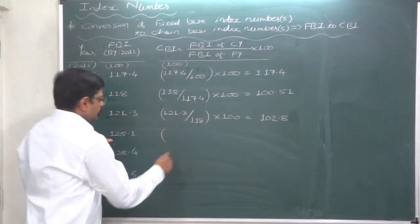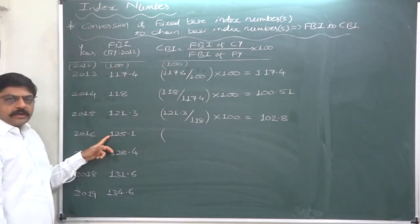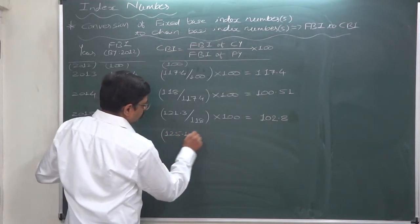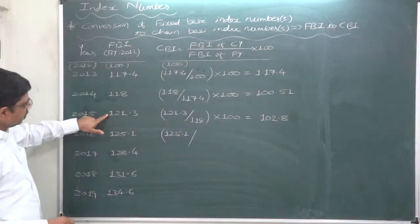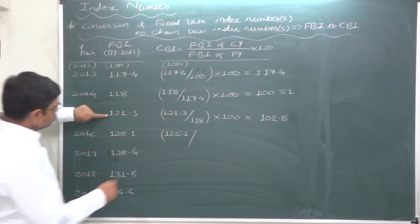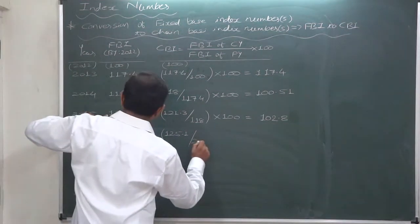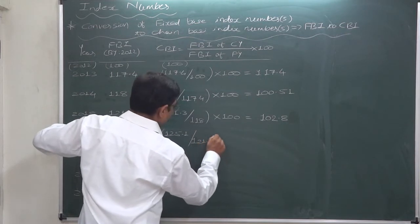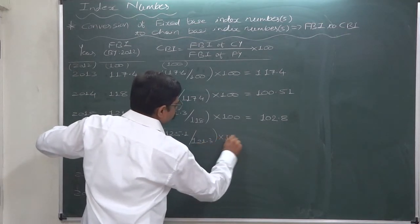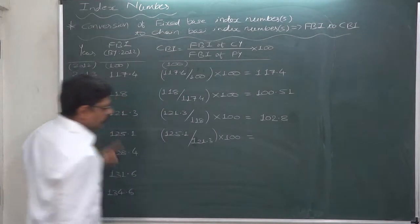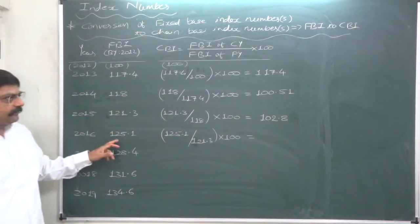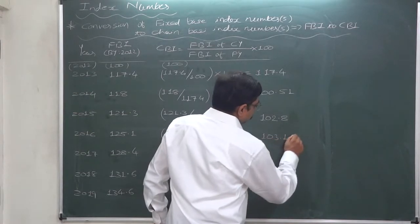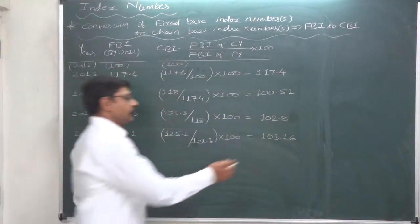For 2016: the fixed-base index number for the current year is 122.8, divided by the fixed-base index number of 2015, which is 121.3. Multiply this ratio by 100. The answer is approximately 101.24.